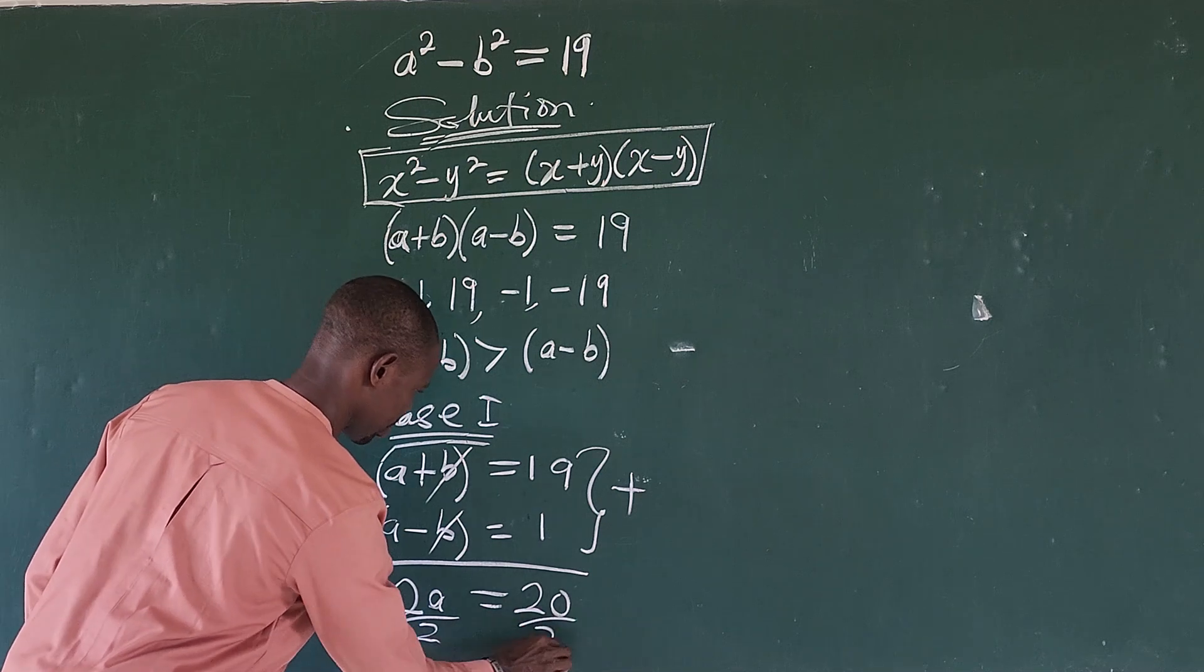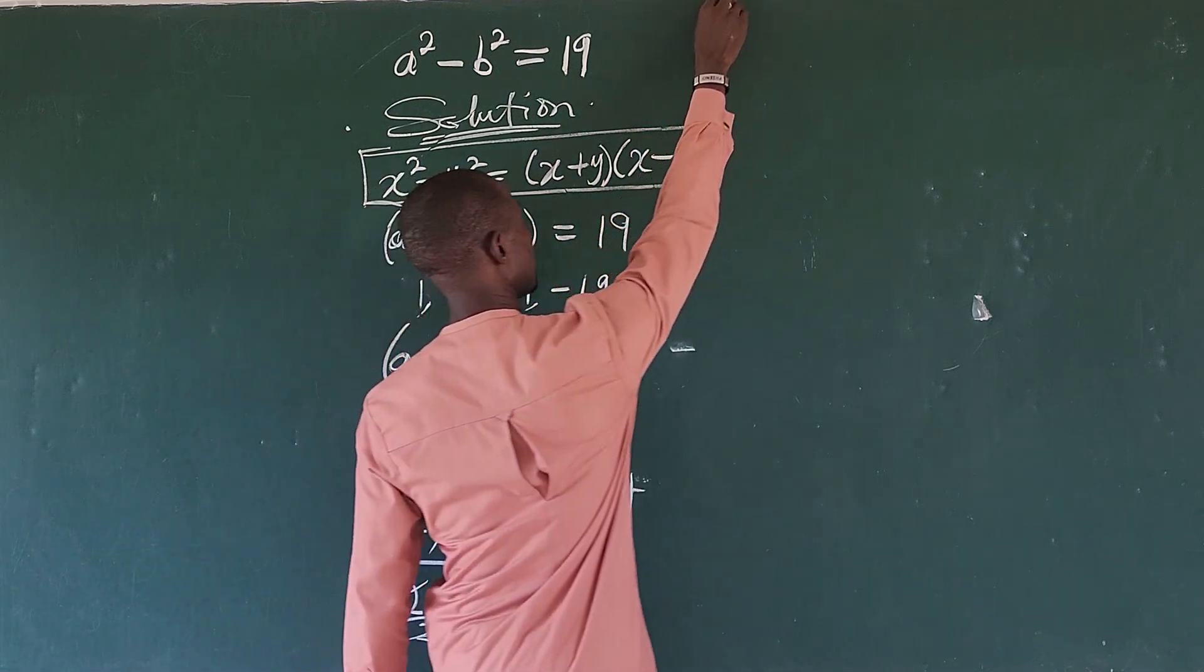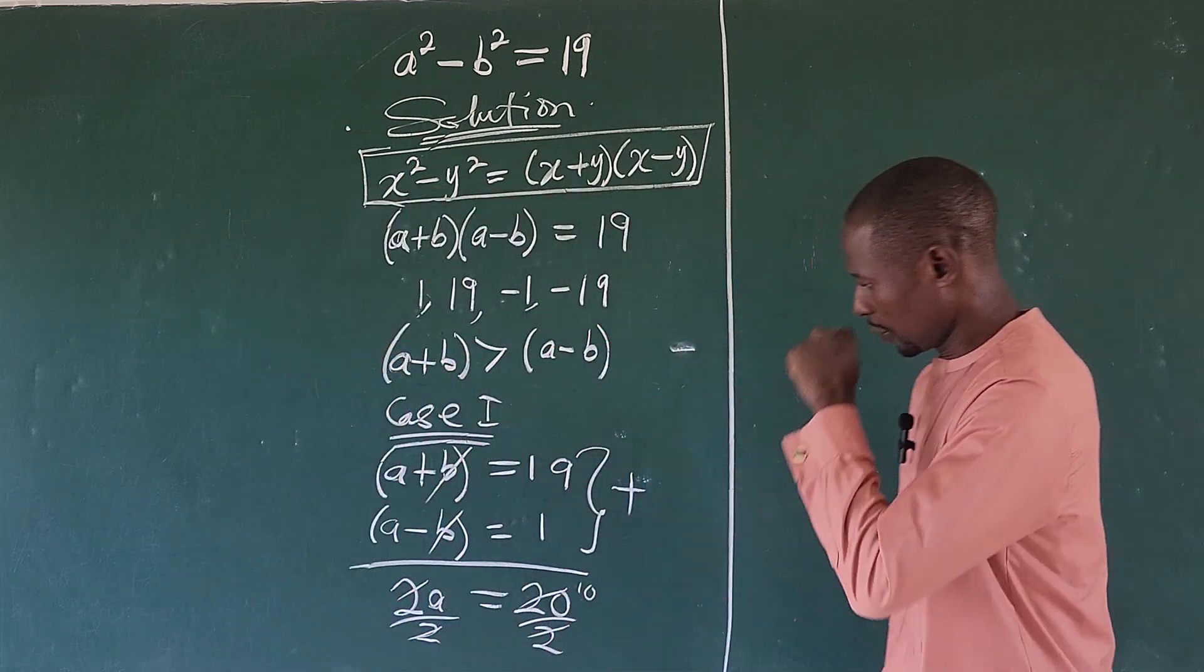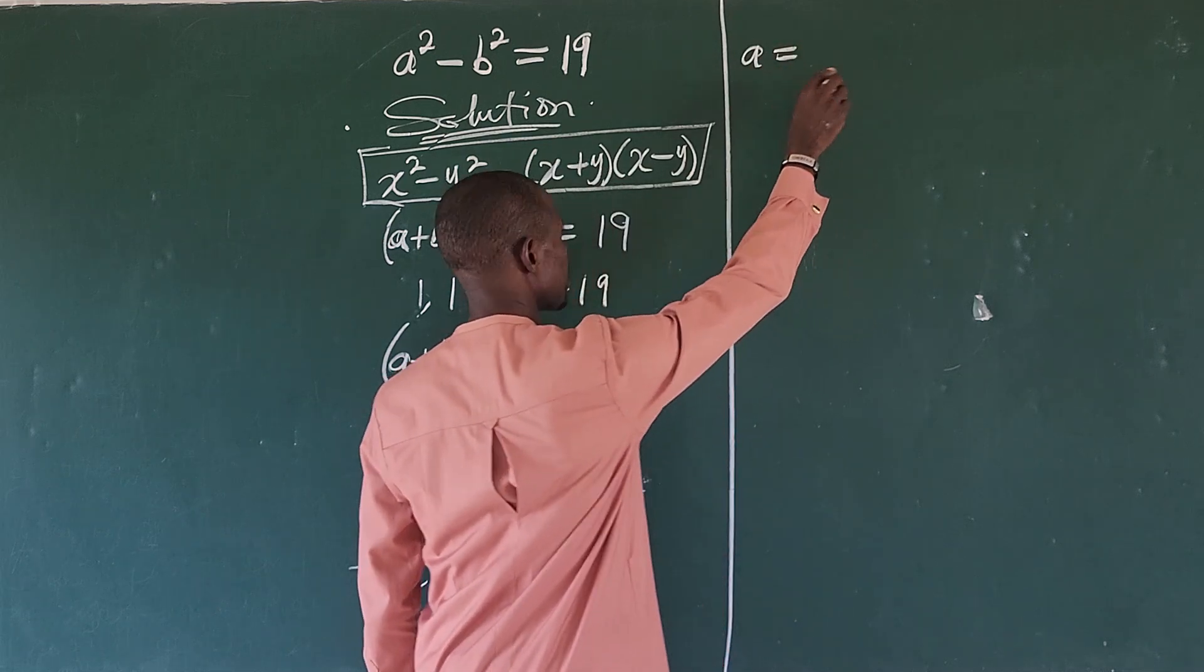So divide both sides by 2. Cancel. Here we have 10. So let's continue on this side. All right. So from here, we're going to have a = 10.